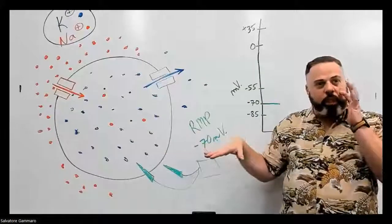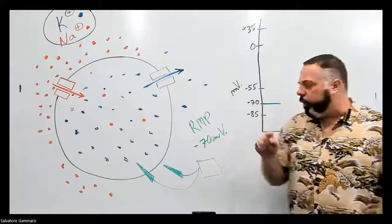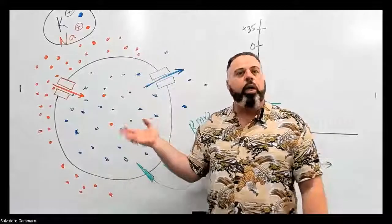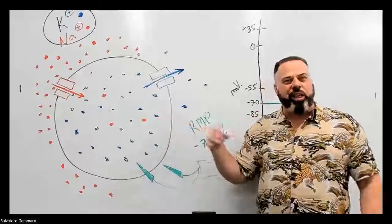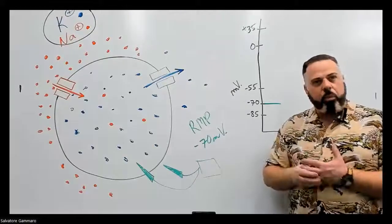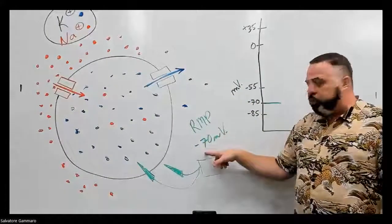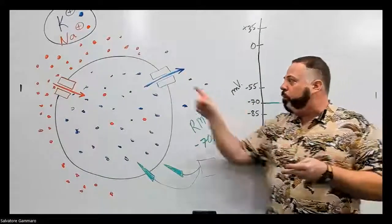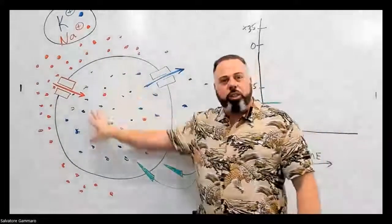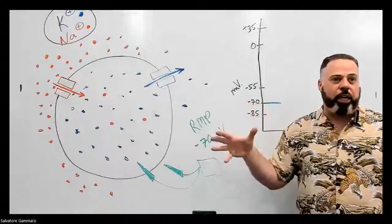If we have more potassium leaving than sodium coming in — more positive leaving than positive coming in — that makes inside the cell more negative. That is why we get the magic number of negative 70: because leaky channels happen more with potassium than with sodium. Additionally, there are a lot of proteins inside the cell that have a negative charge, which also contributes. Those proteins don't leave because they're too big.